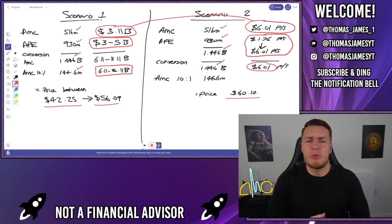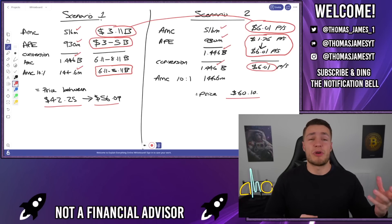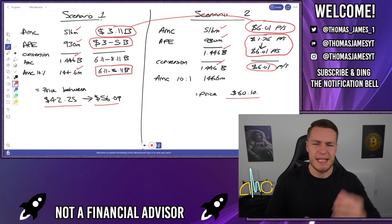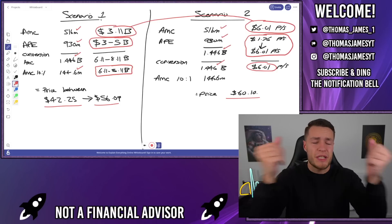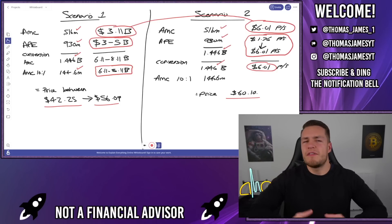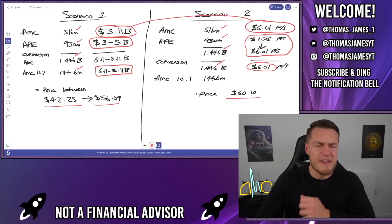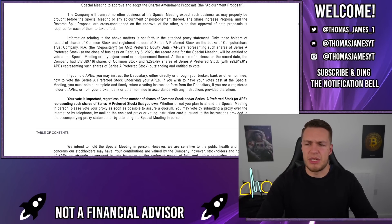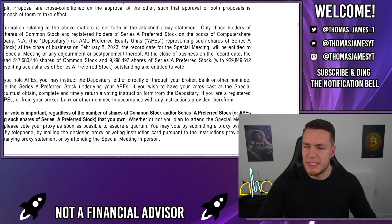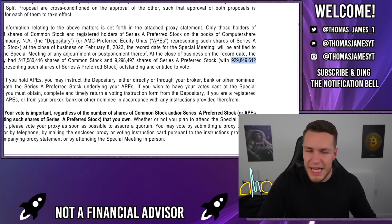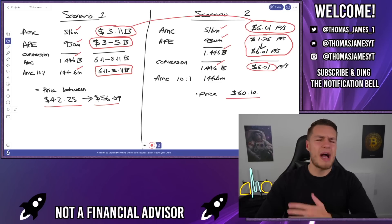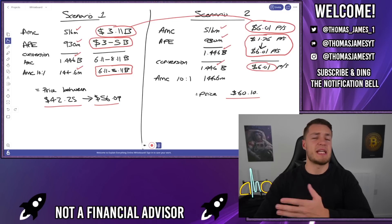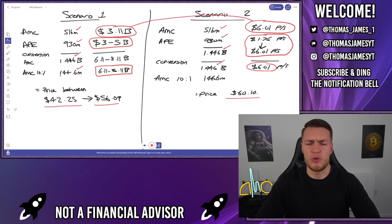I also want to talk about the tons of different variables that could also impact the true conversion price. Scenario number one takes the total number of shares in AMC and the total number of shares in Ape and compares that to the market cap for AMC and the market cap for Ape, effectively creating a hybrid of the two. With AMC, we have a float of 516 million shares. With Ape, we have a float of 930 million — confirmed by the AMC reverse split documentation showing 929.8 million issued shares. That means post-conversion, when Ape converts into AMC, we'll have a total of 1.4 billion AMC shares. Then, after the 10-for-1 reverse split, we'll have 144 million shares in total.